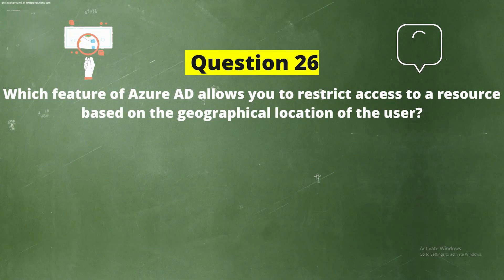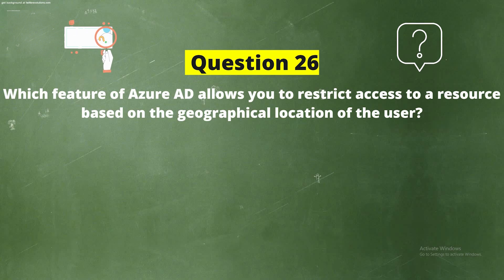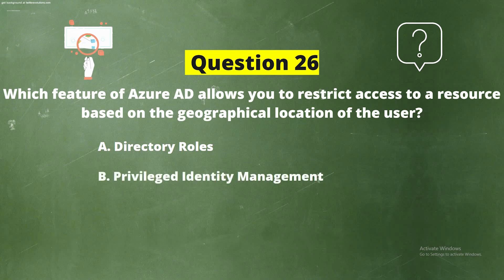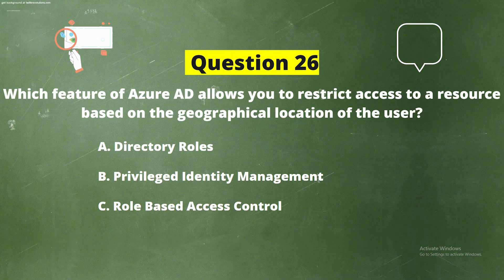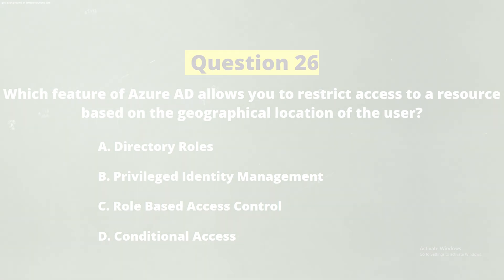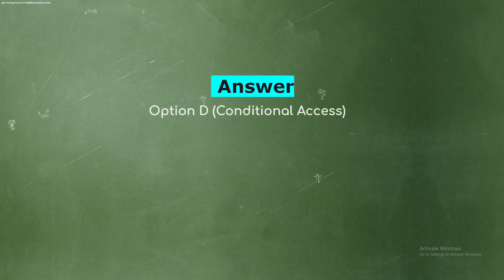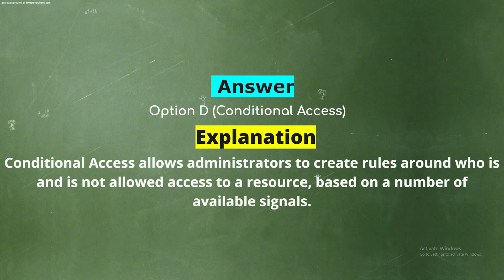Question 26. Which feature of Azure AD allows you to restrict access to a resource based on the geographical location of the user? Option A: Directory Roles. Option B: Privileged Identity Management. Option C: Role-Based Access Control. Option D: Conditional Access. The correct answer is Option D, Conditional Access. Explanation: Conditional access allows administrators to create rules around who is and is not allowed access to a resource based on a number of available signals.